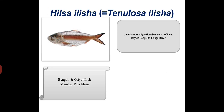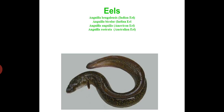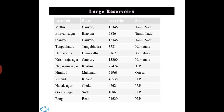Hilsa is an anadromous migratory fish that migrates from seawater to riverine water, so the fishery of Hilsa is badly affected after the construction of reservoirs, barrages, and barriers. Its migratory nature makes it particularly vulnerable to these impoundments.